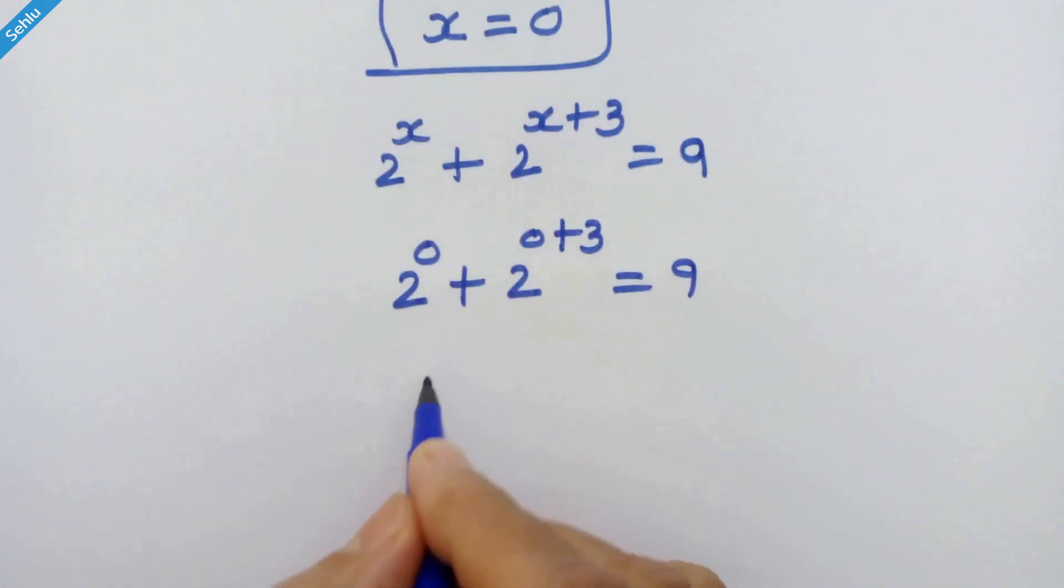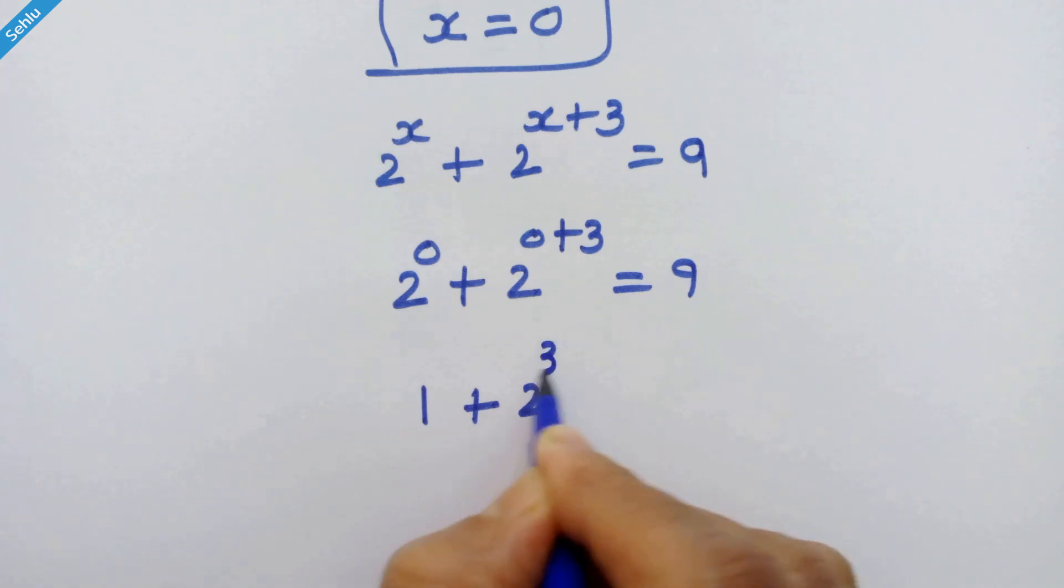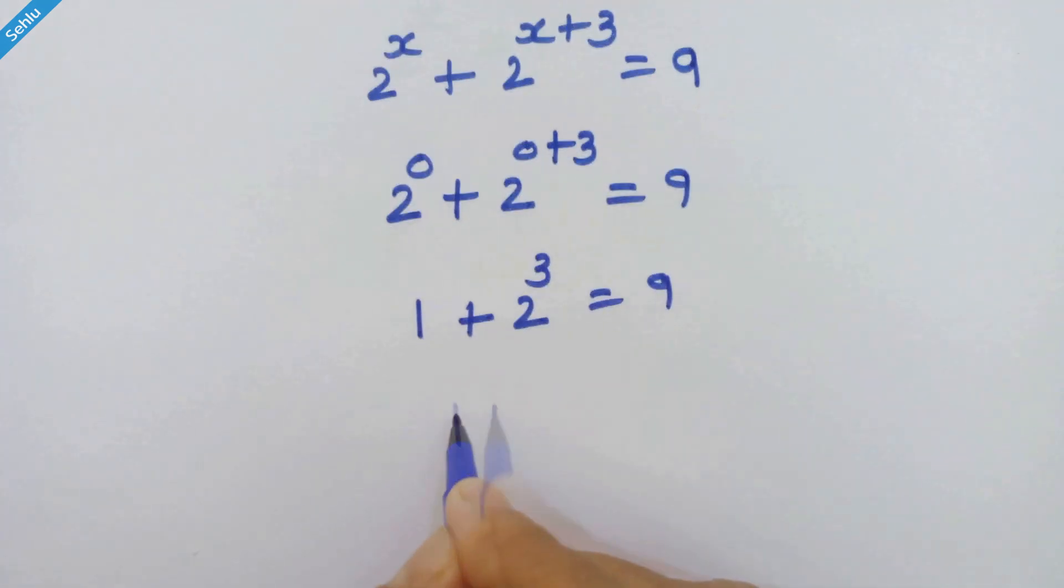Now 2 raised to 0 is equal to 1 plus 2 raised to 3 is equal to 9. So 1 plus 8 is equal to 9.